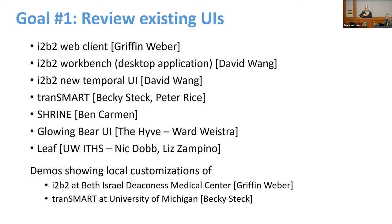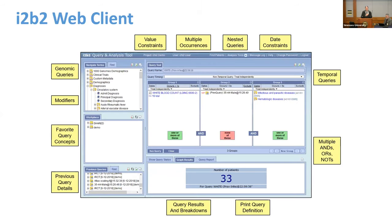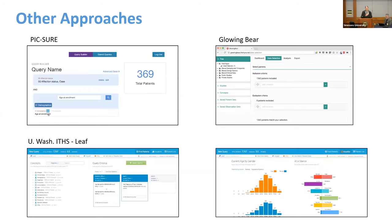For goal number one, we've looked at lots of different interfaces over the last few years, and taken a lot of deep dives of I2B2 as well as other tools. There's a program called Picture that is derived out of I2B2. It uses a very simple, plain Google-like interface, and there are benefits and weaknesses of that.